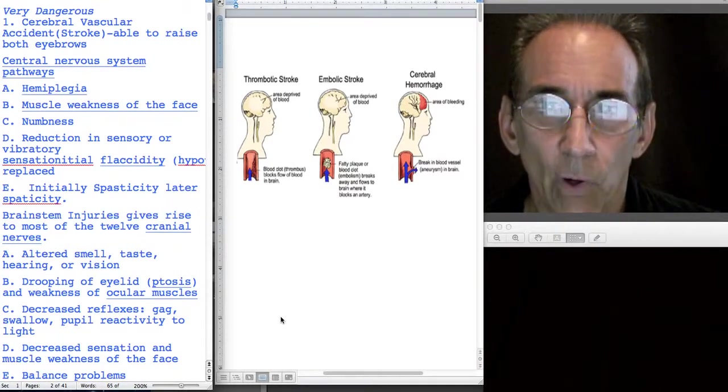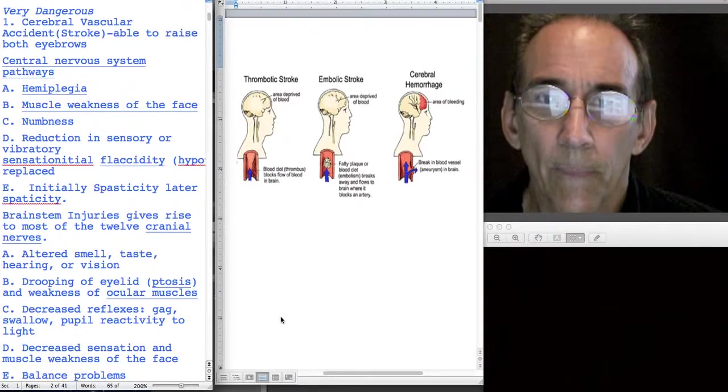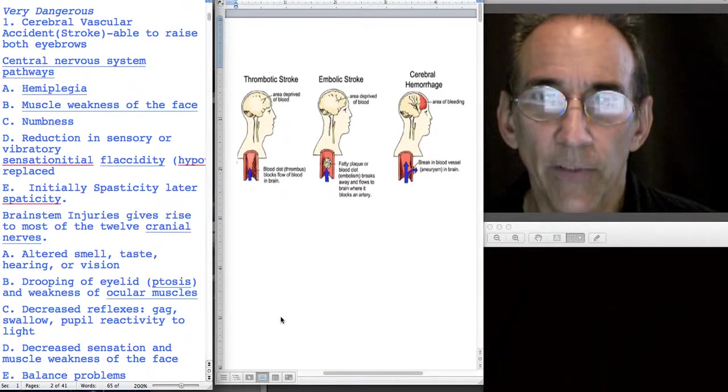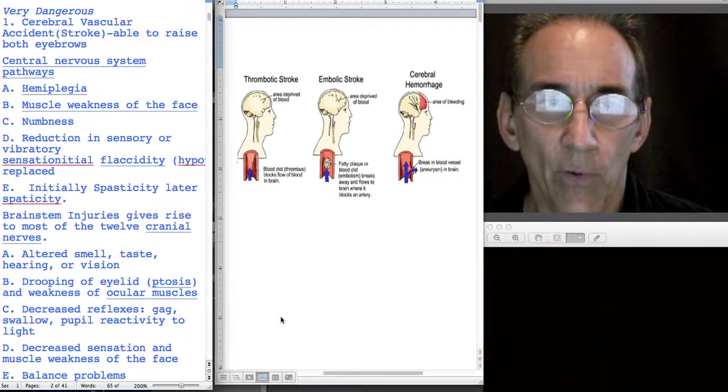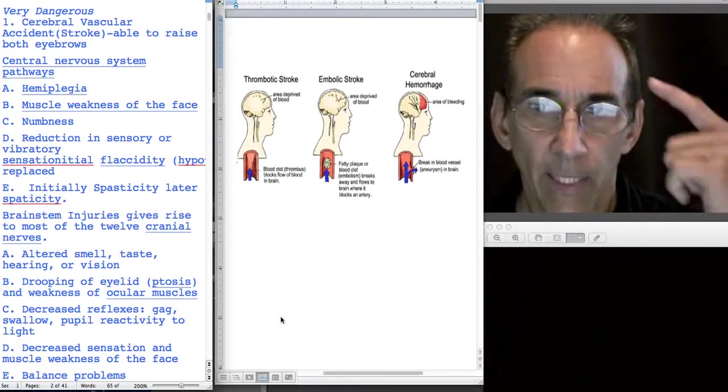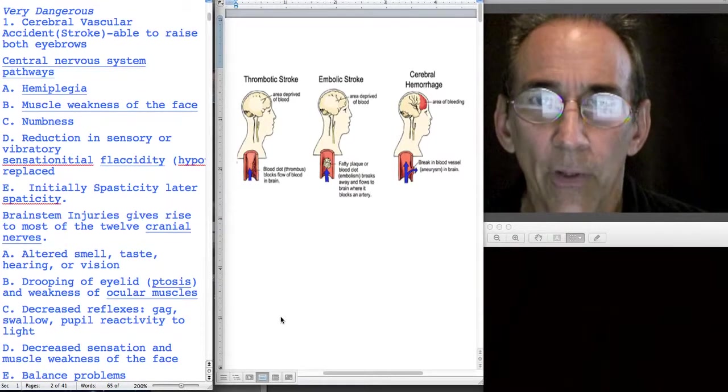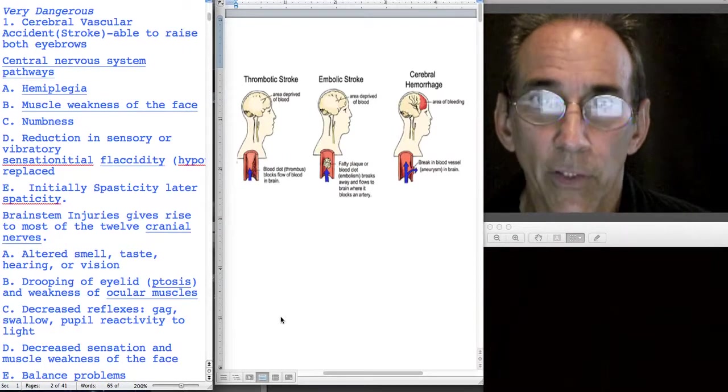When a person has a stroke however, they will be able to do that. So when you see somebody who has facial droop, you always have to do a complete neurological check, but the most important one is can you lift your eyebrows. If you can lift your eyebrows, then we know that you don't have Bell's palsy and it could be something worse, could be a stroke.